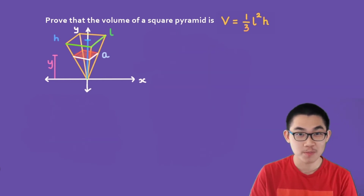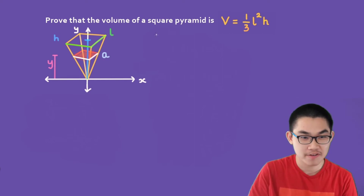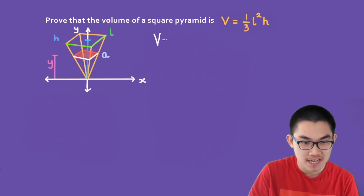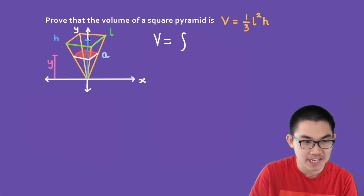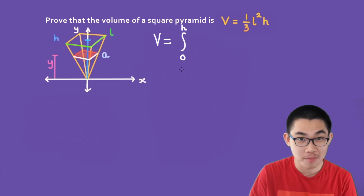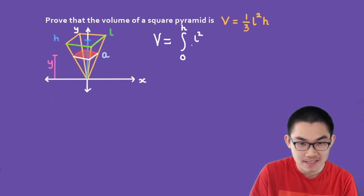We can substitute this into the integral to find the volume. The volume is V equals the integral from 0 to H of (L² divided by H²) times Y² dY. Don't forget the dY.